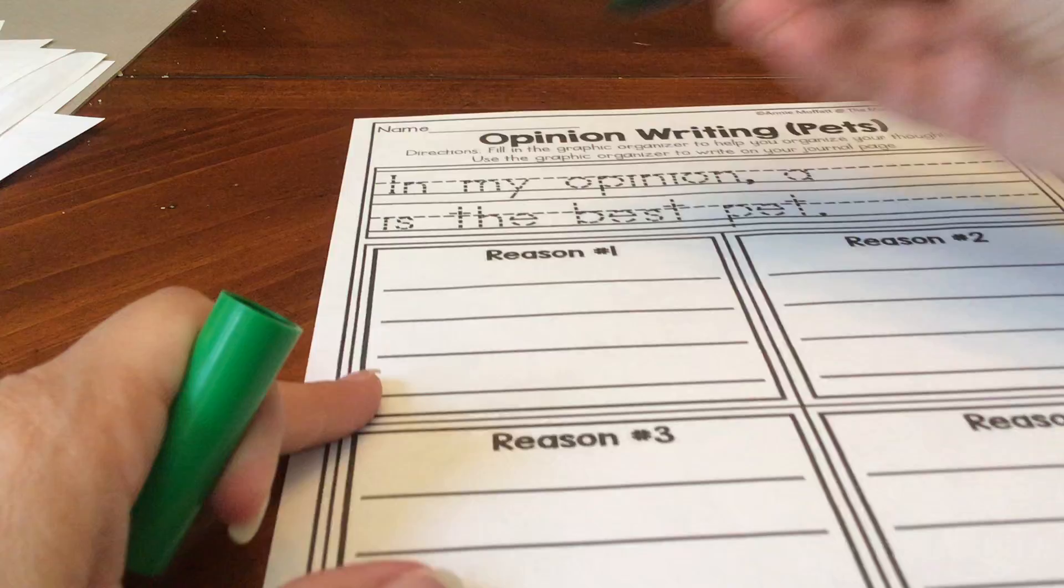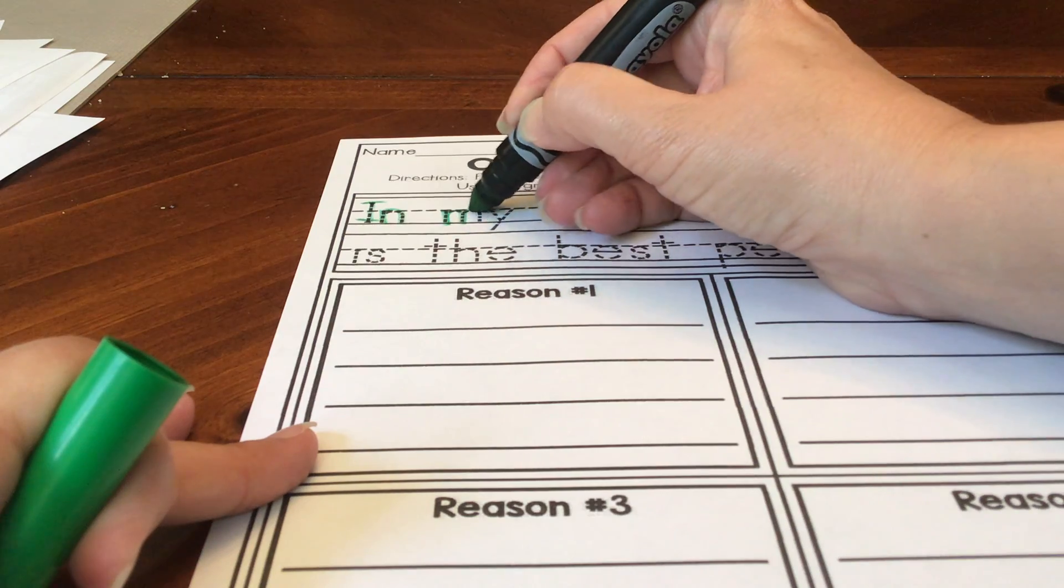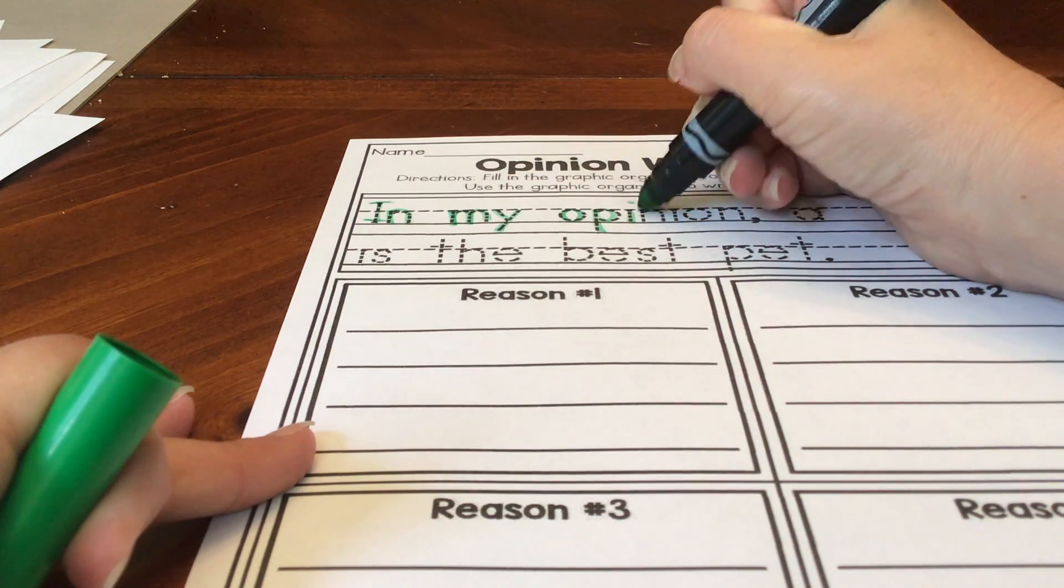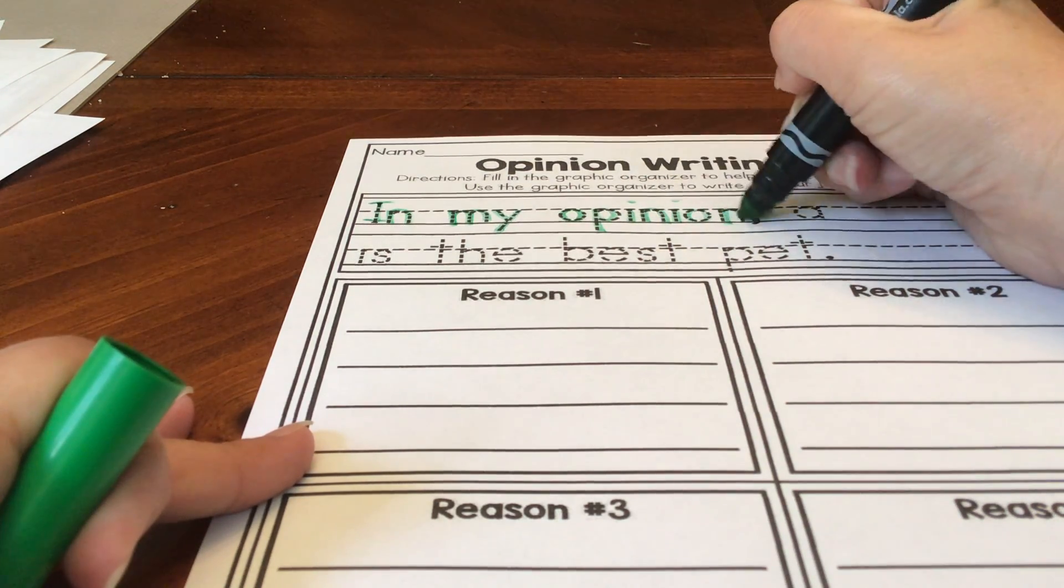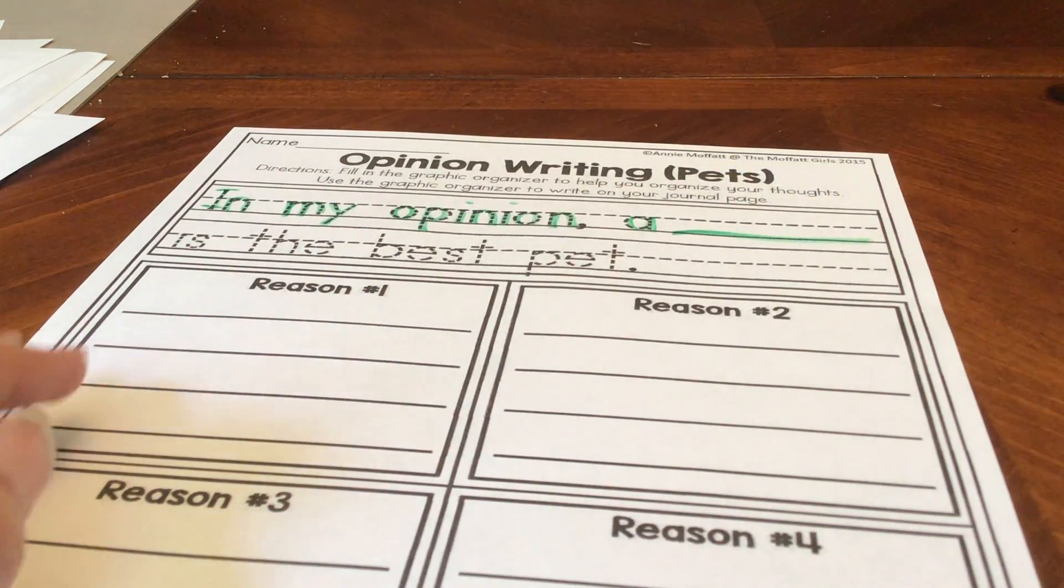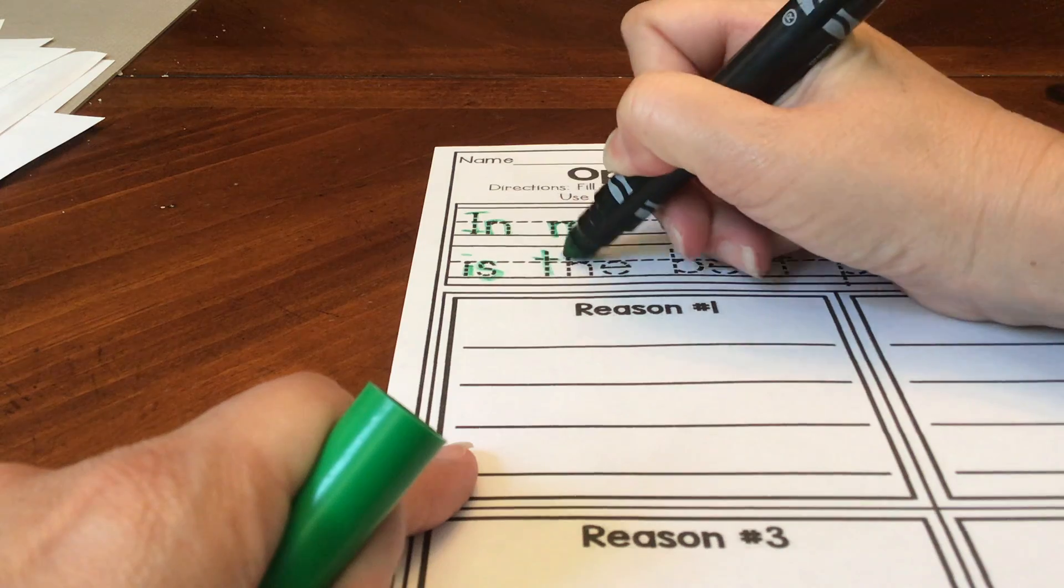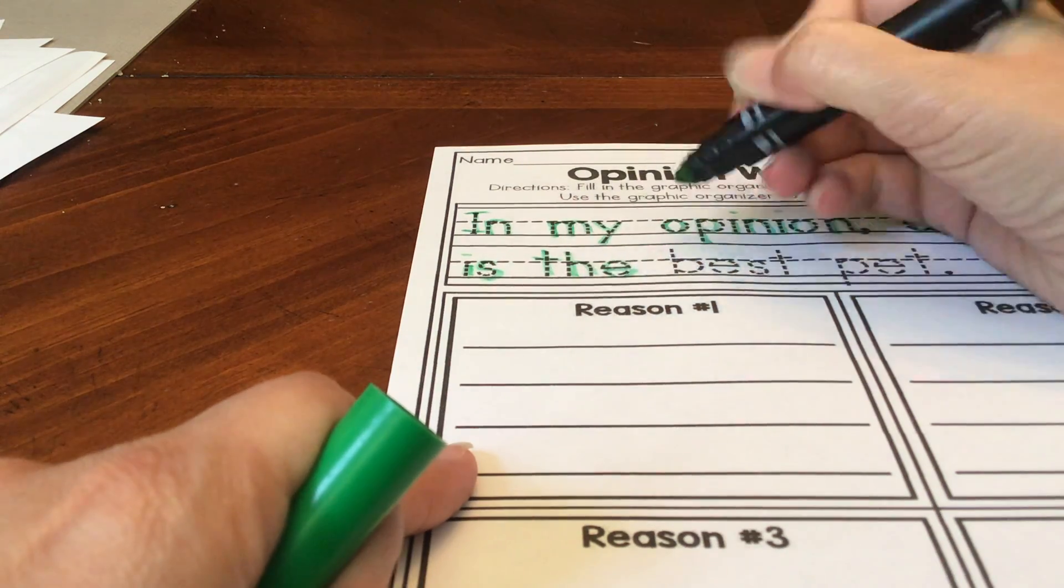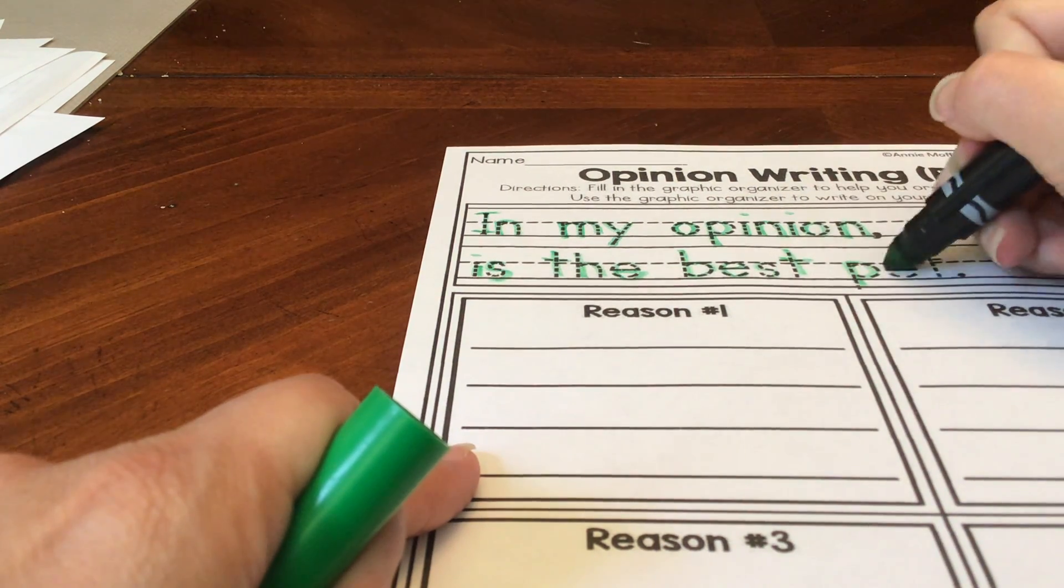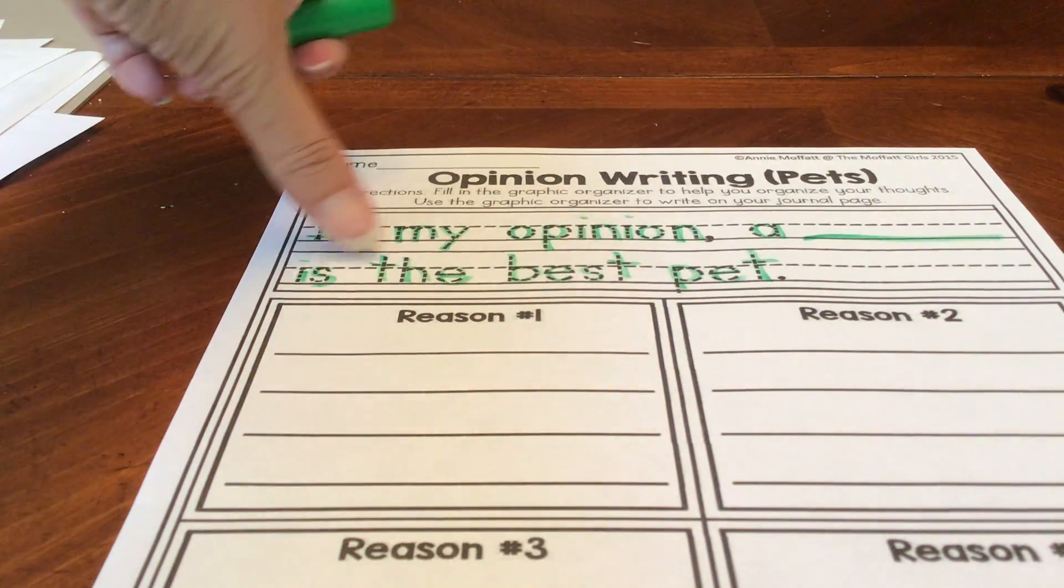Which is yours. Let's see. Let's use green. In. My. Opinion. A. And then there's pretend like there's a blank over here. A blank is the best pet, okay? In my opinion, a blank is the best pet.